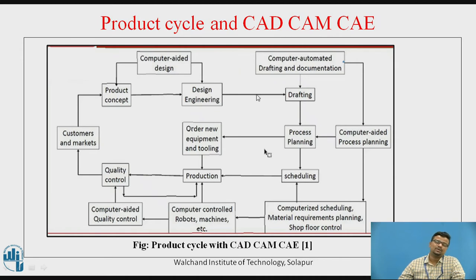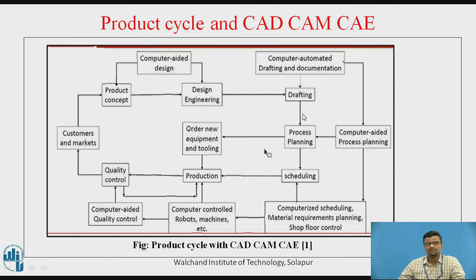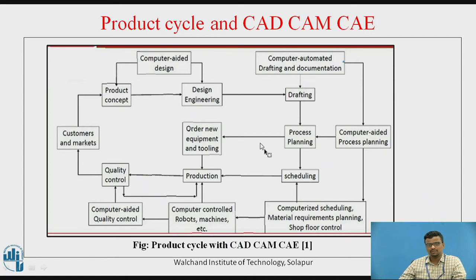There will be the use of front view, top view, side view, isometric view, auxiliary view, nameplate, and bill of materials — each and everything will be created with the help of computer-aided drafting using 3D modeling softwares. After that, there will be process planning with the help of computer-aided process planning softwares. If there is a requirement to order new equipment and tooling, we have to order and use the new equipment and tooling for better production.